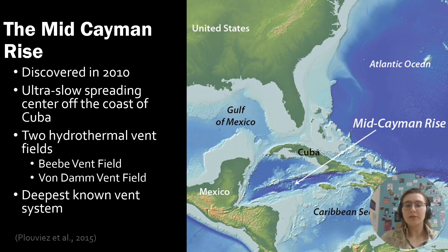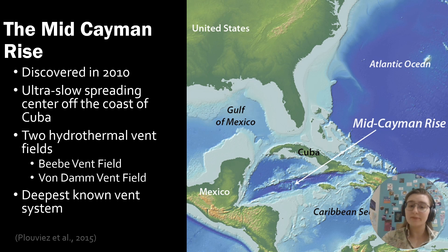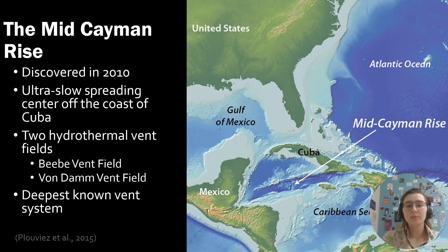The Mid Cayman Rise is where we collected our samples from. The Mid Cayman Rise was discovered in 2010 and is an ultra-slow spreading center off the coast of Cuba. It hosts two hydrothermal vent fields, the Beebe Vent Field and the Von Damm Vent Field. Currently, it is the deepest known vent system on Earth.